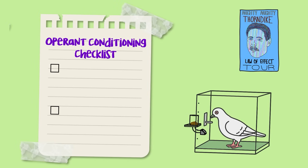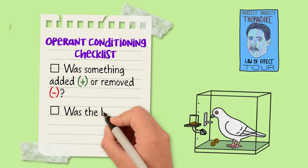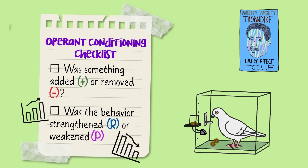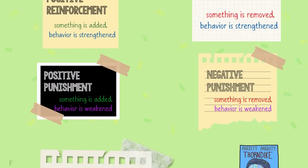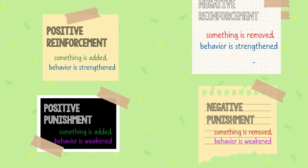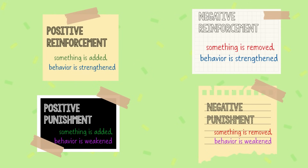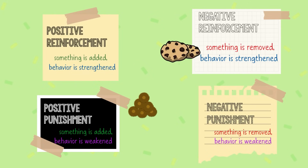So to correctly label a consequence, simply ask: is something added or removed? And did the behavior increase or decrease? That's all you need to crack the code on the four types of operant conditioning. Now go reinforce your own learning — maybe with a food pellet or a cookie.